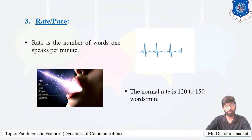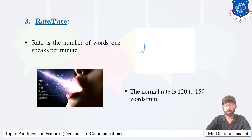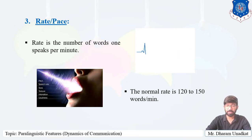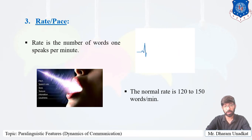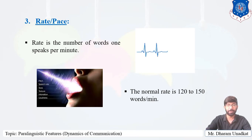Third is rate or pace. Rate is the number of words spoken per minute. It varies from person to person, ranging from 80 to 250 words per minute. The normal rate or pace is 120 to 150 words per minute. If speech is too slow, the speaker is likely considered dull; if too fast, the listener does not get enough time to grasp the message.